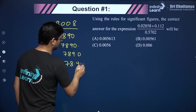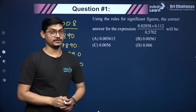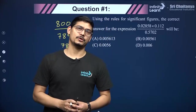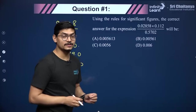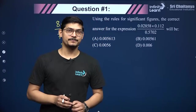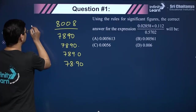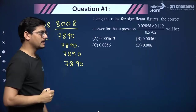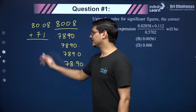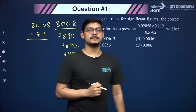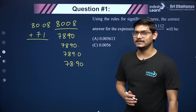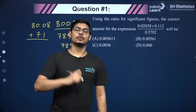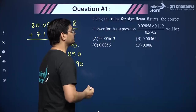Terminal zeros are significant only if there is a decimal point. For example, 7890 — this zero is not significant because there is no decimal point. But the moment you put a decimal point, this zero becomes significant, giving four significant figures. For addition and subtraction, you look at the number of decimal places. For example, adding 80.08 and 7.1 — the first has two decimal places, the second has one, so the final answer should have only one decimal place.